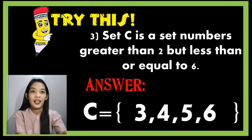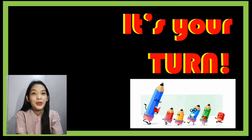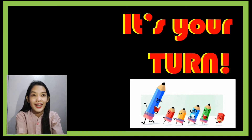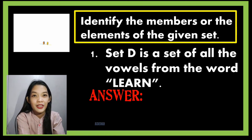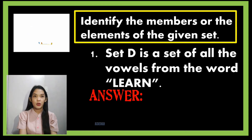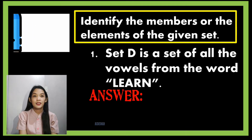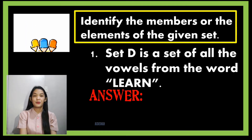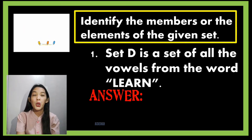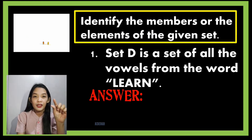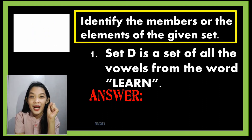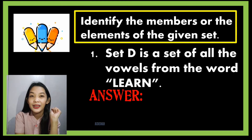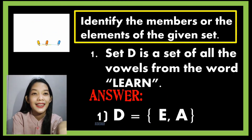You can pause this video and get a scratch paper in order to answer, because it's your turn. Let's read the direction: identify the members or the elements of the given set. For number one, Set D is a set of all the vowels from the word 'learn.' Not from the English alphabet, but only from the word 'learn.' The answer is Set D has elements e and a, because we only have e and a as vowels from the word 'learn.'